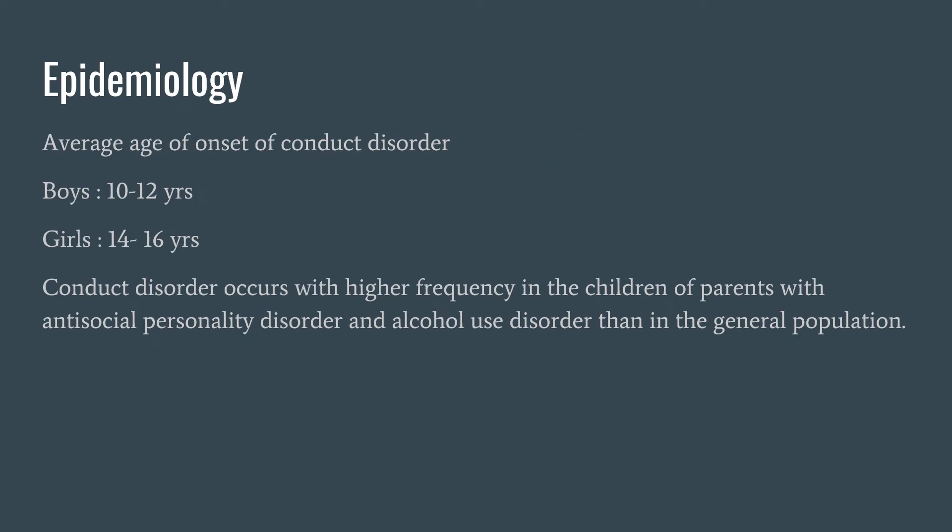Regarding epidemiology, the age of onset is younger in boys than in girls, around 14 to 15 years of age in girls. It is found to occur with higher frequency in children of parents with antisocial personality disorder or those with alcohol use disorder when compared to the general population.